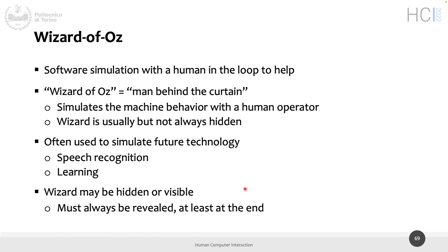It's typically done to simulate future technology that either isn't possible or is too slow. If something needs three hours to give you an answer, that's not acceptable from a user interface perspective — you can't wait three hours. A person can give you that answer quicker. The wizard is typically hidden, but can also be visible, and is definitely made visible at the end of the experiment, when the person discovers there was a human behind the curtain.